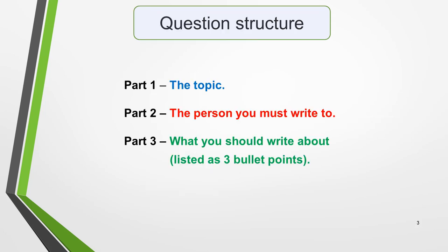All questions for IELTS letters have the same structure. They're made up of three parts: Part 1 is the topic, Part 2 is the person you're writing to, and Part 3 is what you should write about, listed as three bullet points.